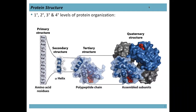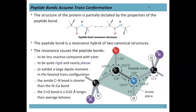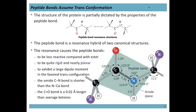You should definitely know the difference between primary, secondary, tertiary, and quaternary structure. A lot of this structure comes from the nature of the peptide bond. The peptide bond has a significant amount of resonance from the lone pair of the nitrogen onto the carbonyl. You can see the two different resonance structures — one shows a sigma bond between the nitrogen and carbonyl, and in the other there is a double bond between them.